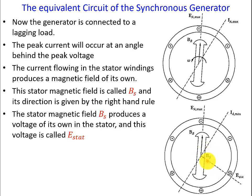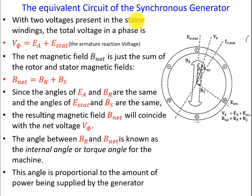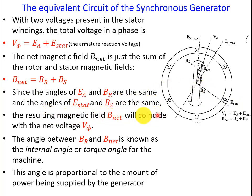The stator magnetic field BS produces a voltage of its own, called E_stator. With the two EMFs present in the stator windings, the total voltage in the phase is: V_phase = EA + E_stator, where E_stator is the armature reaction voltage. The net magnetic field B_net is the sum of the rotor and stator magnetic fields: B_net = BR + BS. Since the angles of EA and BR are the same, and the angles of E_stator and BS are the same, the resulting B_net will coincide with the net voltage V_phase.